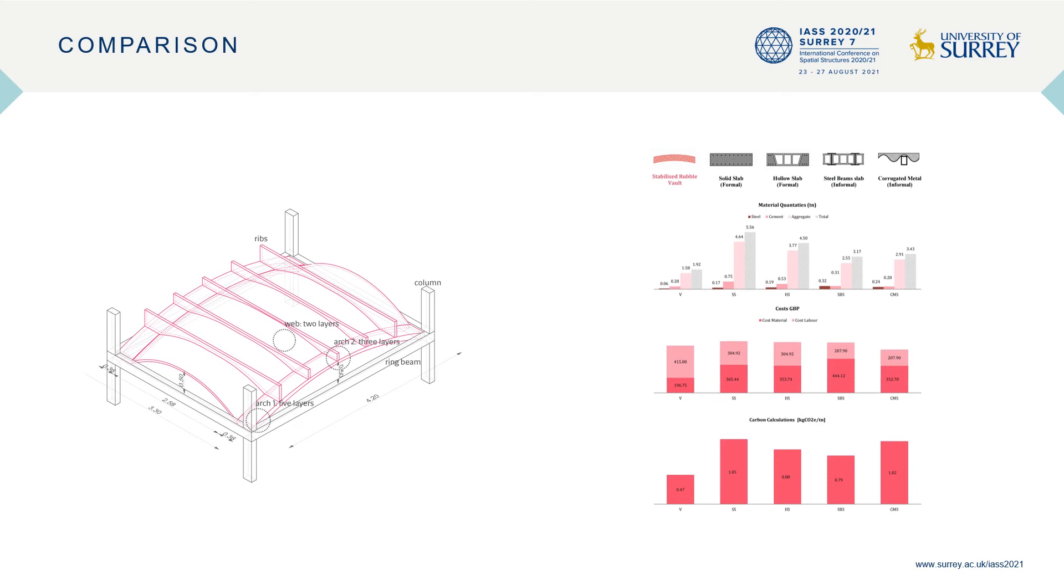After passing the Syrian building codes, we wanted to make a cost and embodied carbon comparison between the vaulted system and the slabs available in Syria. Compared to the equivalent flat slab in Syria, the proposed thin shell system offered an average cement reduction of 65 percent. Here we're talking about formal solid concrete slabs. And it's also 20 percent less in cost than any informal slab, which are usually also cheaper than formal slabs.